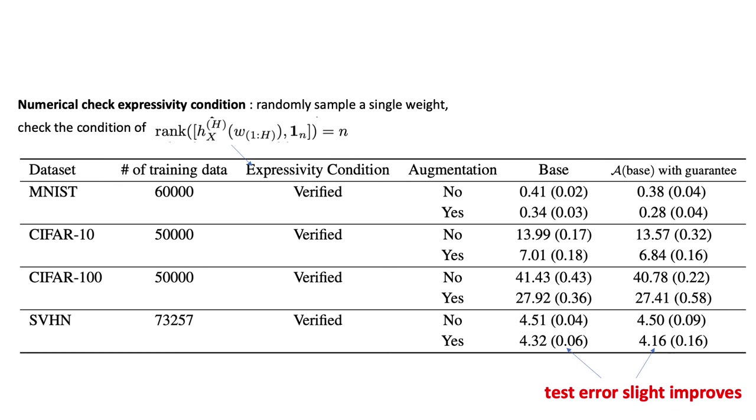So we also look at the test error for each dataset for both the data augmentation case and the non-data augmentation case. We can say in all these examples, our modified algorithm has slightly better error than the original base algorithm. Of course, we don't have a theory yet about the generalization perspective.